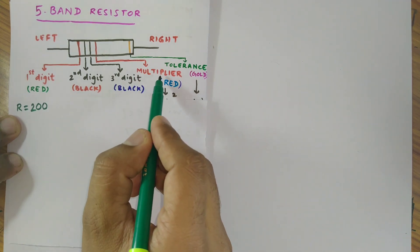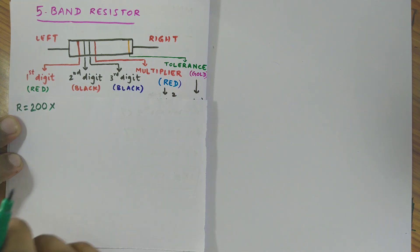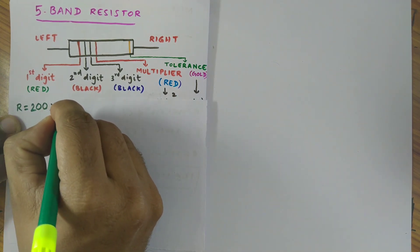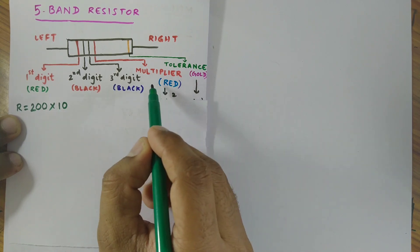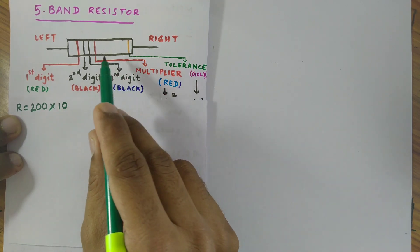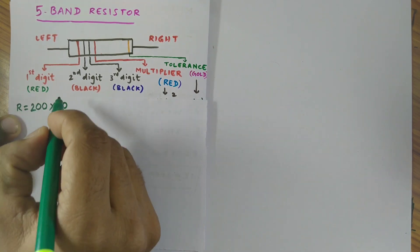Then to write the value of multiplier we put a multiplication sign, then 10 is raised. The value of this multiplier, that is this ring is red in color, so its value is 2. 2 is raised to the power of 10.